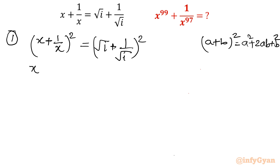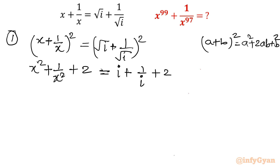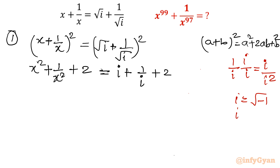We know the whole square formula: a plus b whole square equals a squared plus 2ab plus b squared. Applying it: x squared plus 1 over x squared plus 2 equals i plus 1 over i plus 2. Now I will use the property of complex number i: 1 over i can be written by multiplying numerator and denominator by i, giving i over i squared. Since i squared equals minus 1, our denominator is minus 1, so this value becomes minus i.